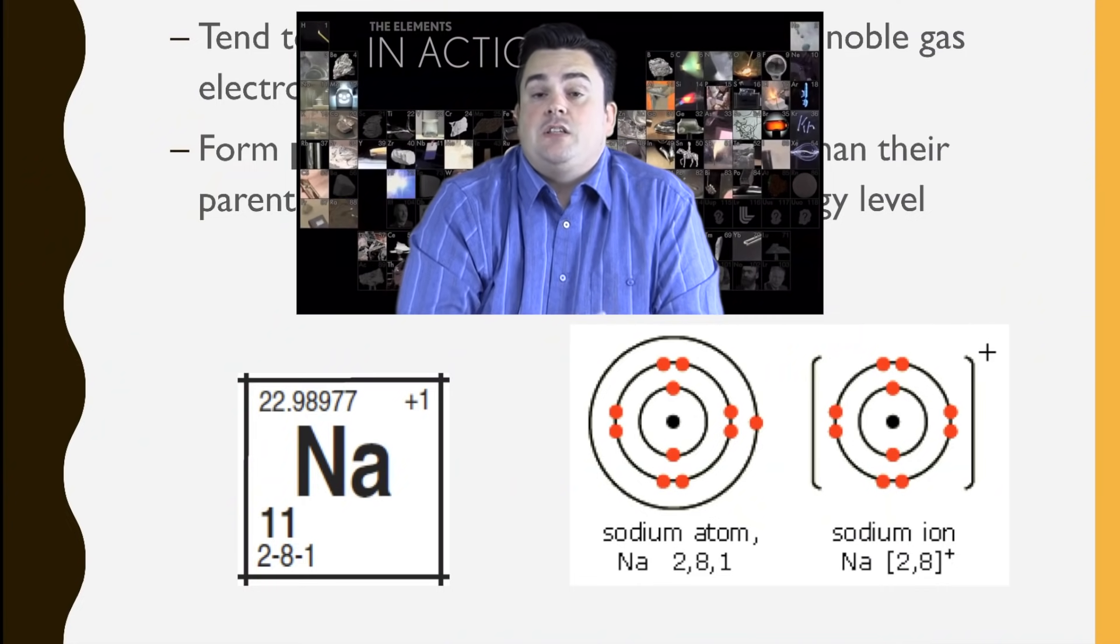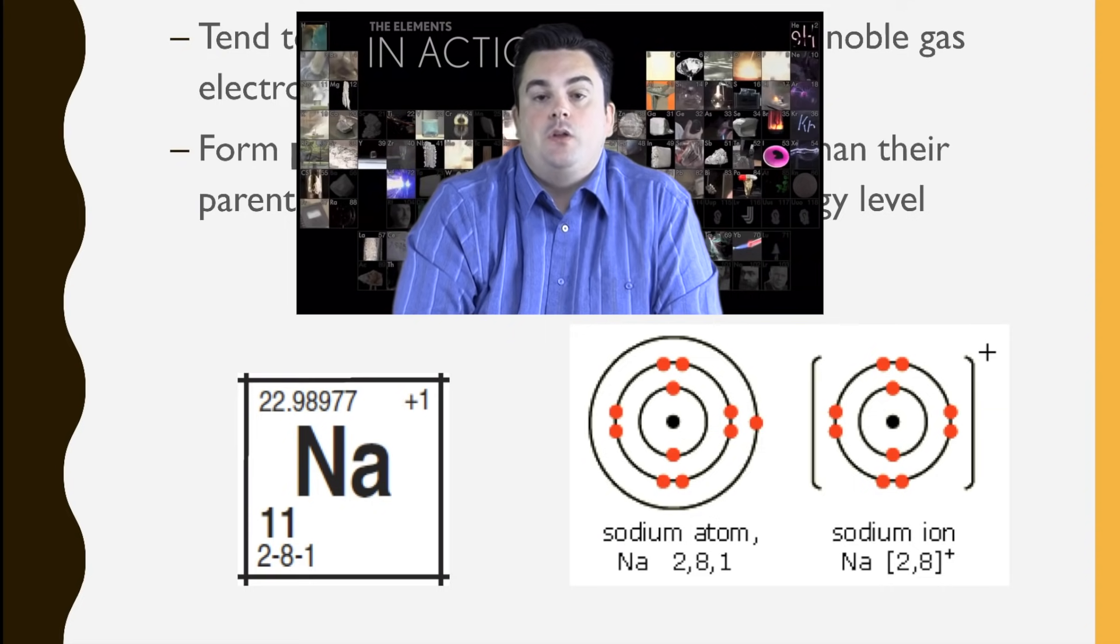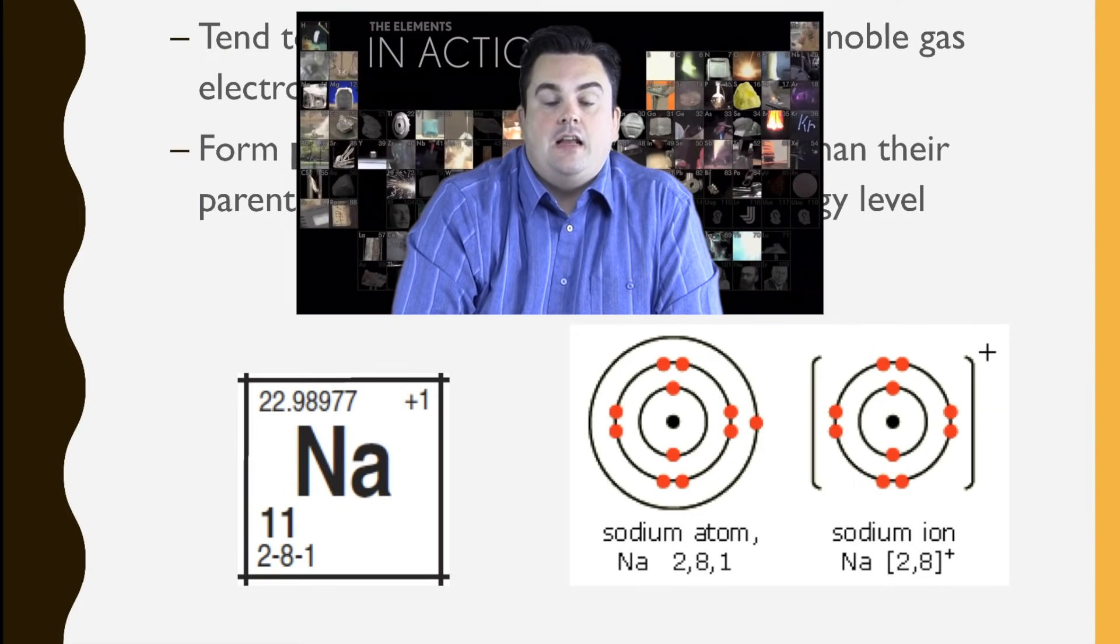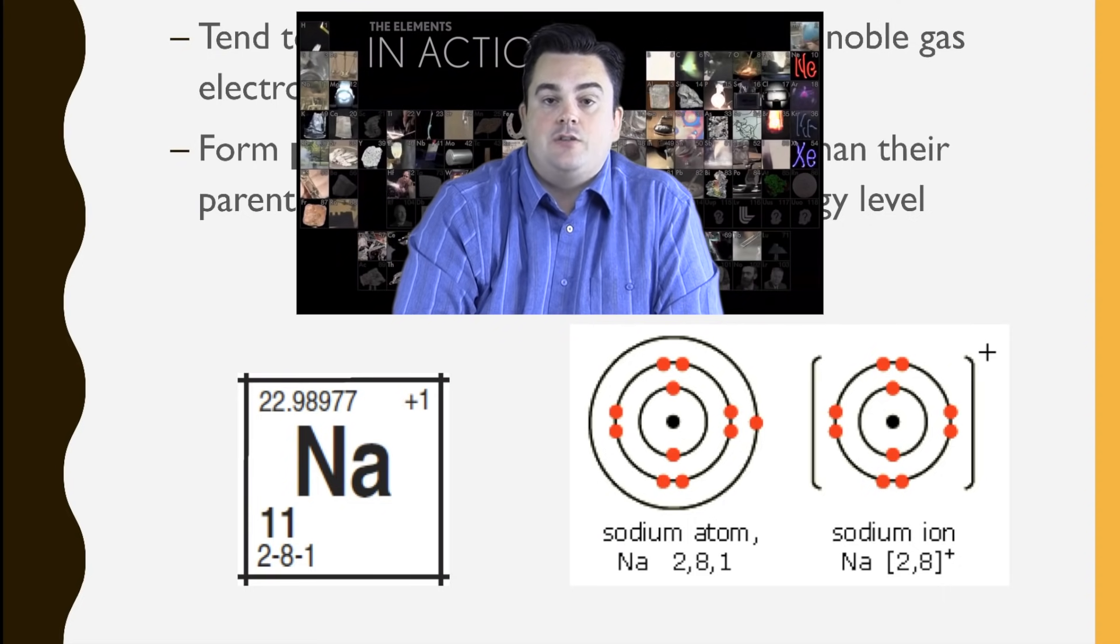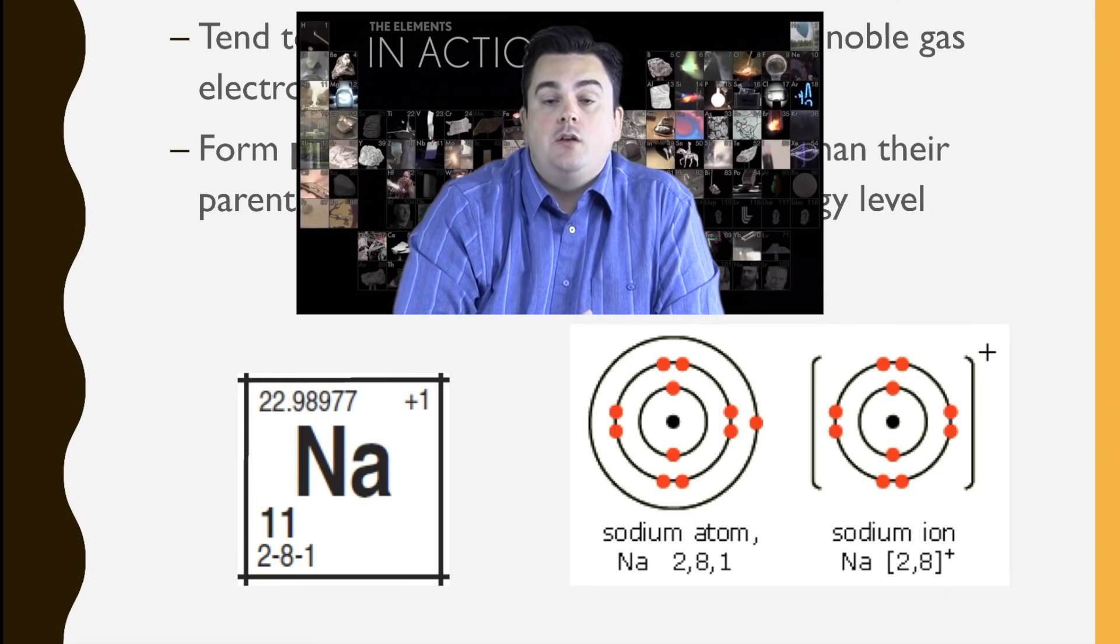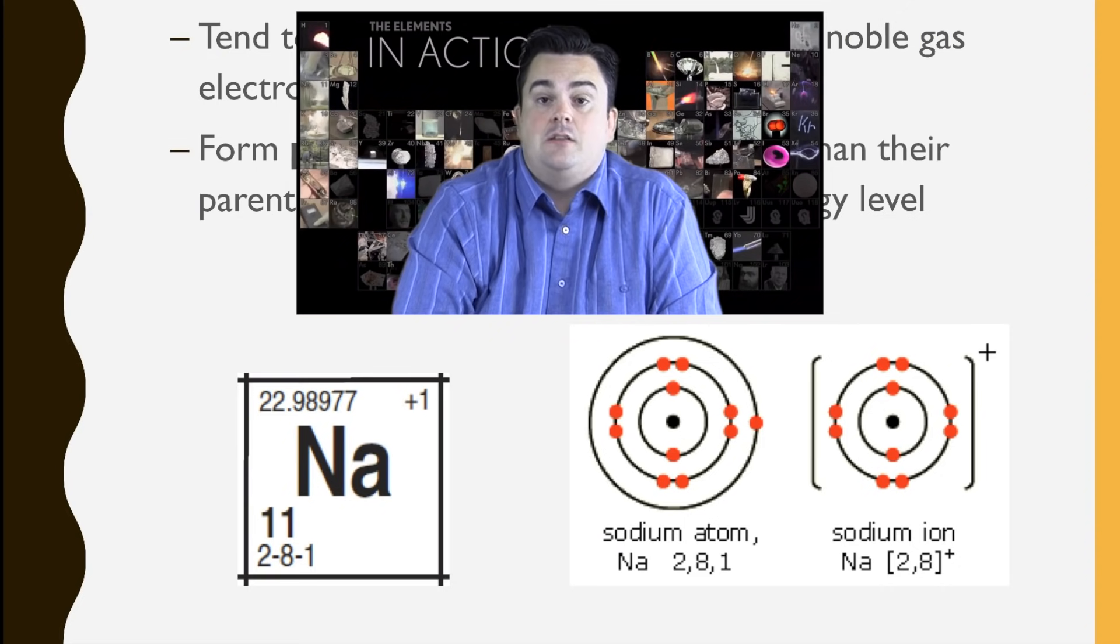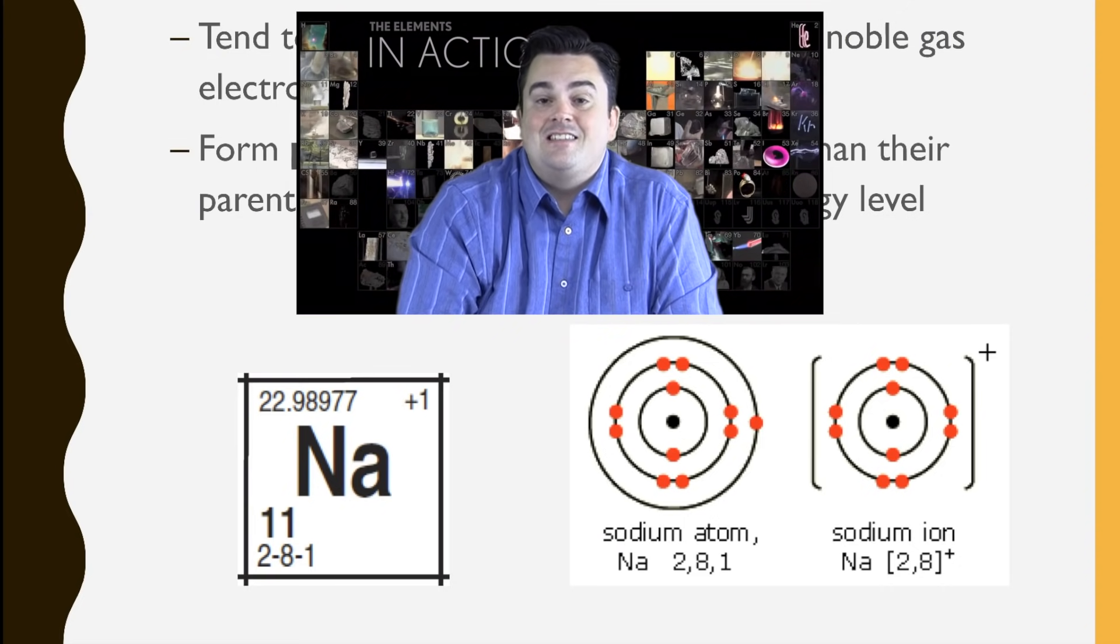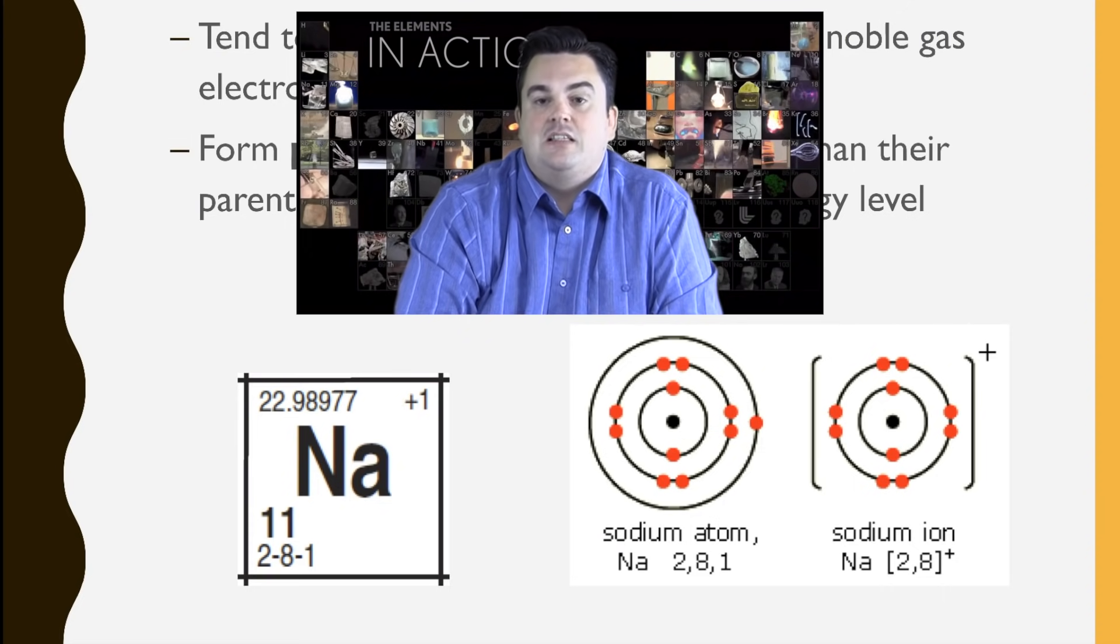So if you take a look at the two images we have at the bottom here, the one on the left is sodium from your periodic table. Now it has an electron configuration of 2, 8, 1. It has one valence electron. Now to become like a noble gas, it can either lose 1 to have that 8 that's there in the second shell, or it can gain 7 to have a total of 8 in the third shell. It's much easier to lose that 1.